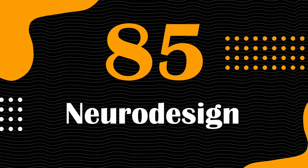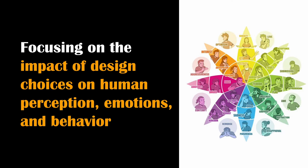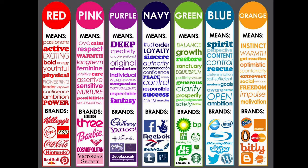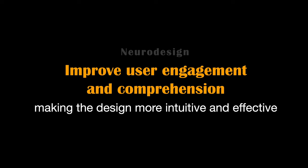Neuro-design is the fusion of design and neuroscience, focusing on the impact of design choices on human perception, emotions, and behavior. It is needed to create more effective and engaging designs by understanding how the brain processes visual information. Designers can utilize insights from neuroscience to optimize user experiences, from website layouts that enhance cognitive flow to product packaging that triggers desired emotional responses. For example, a brand's choice of colors and layout can be informed by neuroscience research to improve user engagement and comprehension.